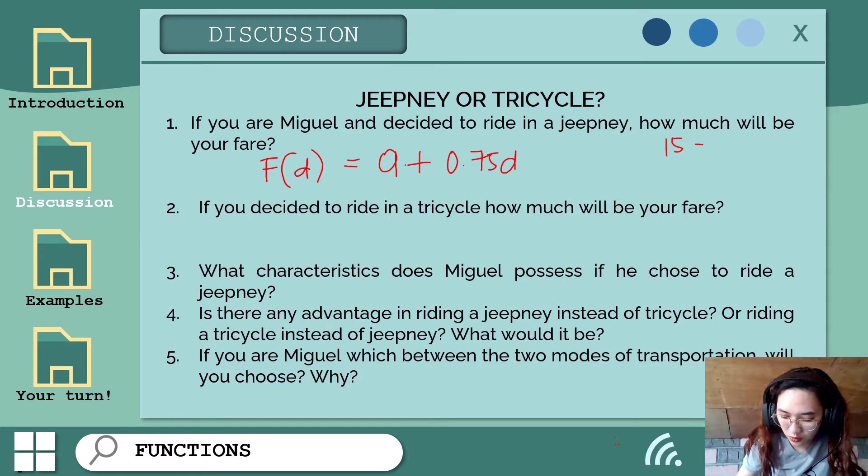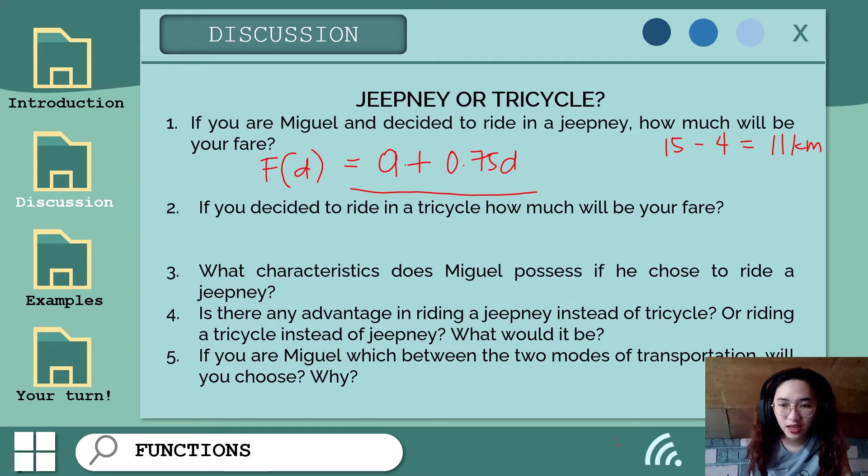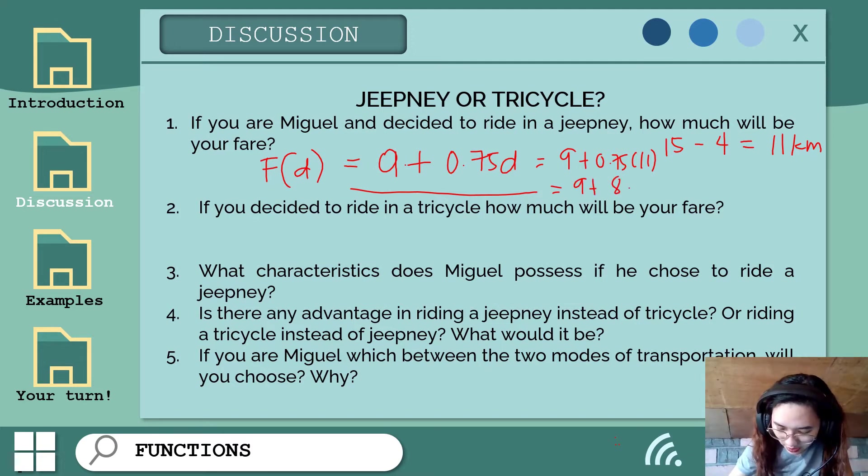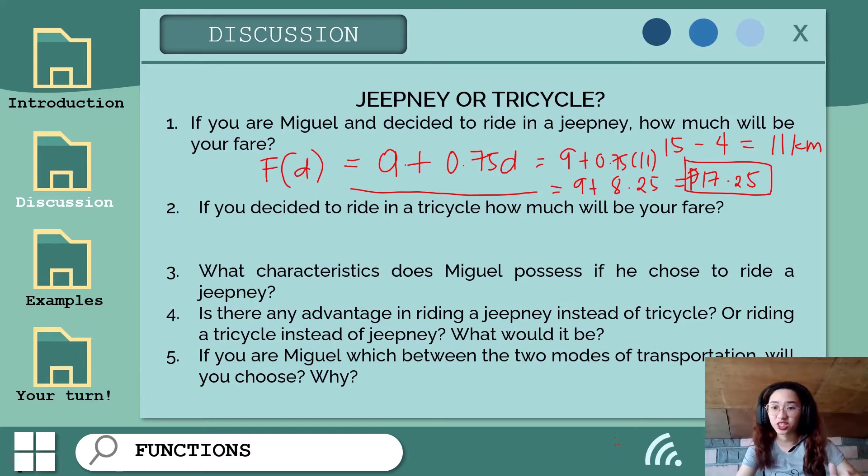For 15 kilometers, the excess after 4 kilometers is 11 kilometers. We will use our given function at 11 kilometers. Substitute: F(d) = 9 + 0.75 times 11. That will give us 9 plus 8.25, which equals 17 pesos and 25 cents. So that's the total fare if he rides the jeepney.